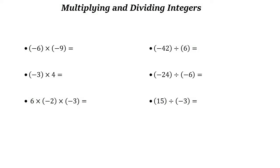Multiplying and dividing integers. To multiply two integers, if both integers are positive, we learned this before — it's easy. For example, six times nine: both are positive, so the answer is 54.